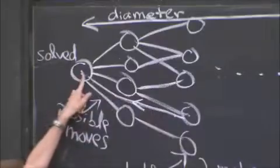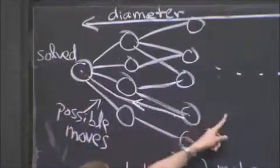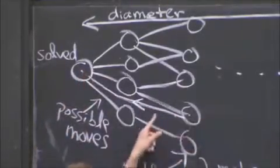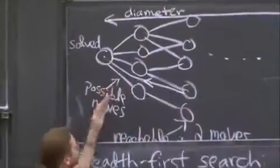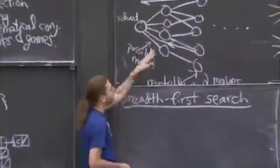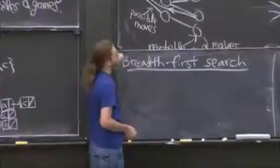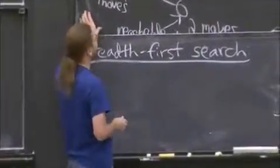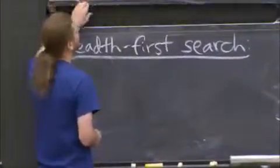You have to realize, oh, that's a vertex I've already seen. I don't want to put it here, even though it's something I can reach from this node, because I've already been there. So you've got to worry about things like that. Yeah, that's, I guess, the main thing to worry about.